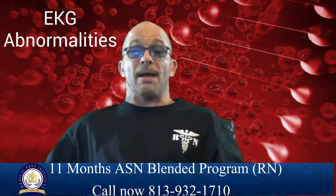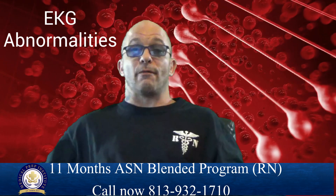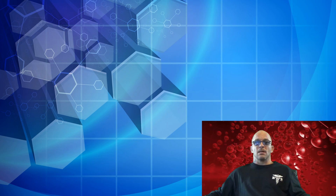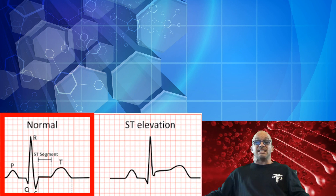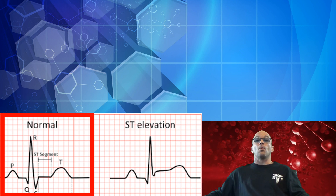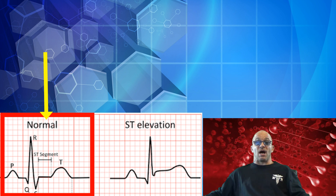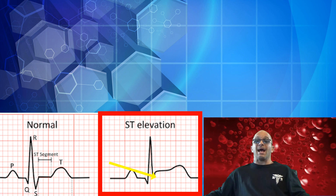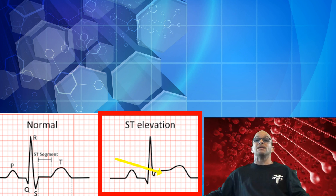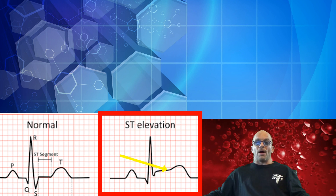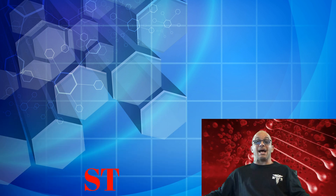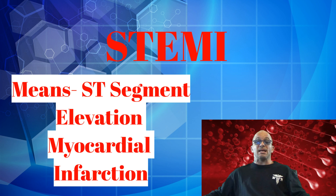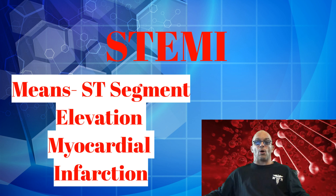So now that we have reviewed basic concepts, we can now go into abnormal waveforms and their corresponding meanings. Look closely at this rhythm. The ST segment is usually observed with a smooth transition from the isoelectric line into the rise of the T wave. This rhythm shows the S wave elevating above the isoelectric line, and there is no uniform T wave. They are merged together above the isoelectric line, which is known as ST segment elevation, commonly called a STEMI — ST segment elevation myocardial infarction.